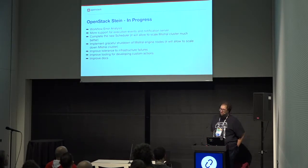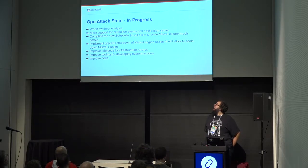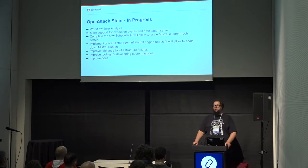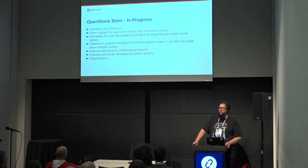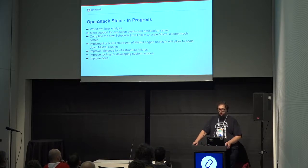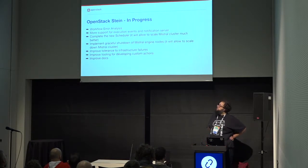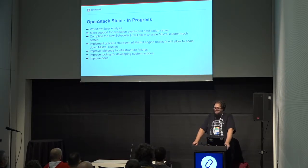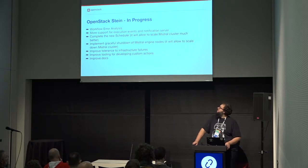In progress: we have workflow error analysis that's been in progress for a while. It might not be ready for the initial Stein release, but it allows you to drill down and debug what went wrong with your workflow and your actions in a more visual and specified way, instead of using the Mistro client to dig down manually — getting the execution ID, probing the result, getting the actions, and drilling down step by step. With workflow error analysis, that's much more visual and easier. There's also more support for execution events and notification servers — right now we just support webhooks, but we're working on more notification methods, which will probably land in Stein.